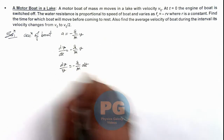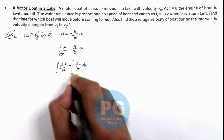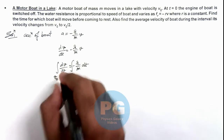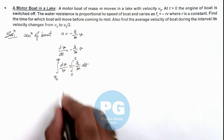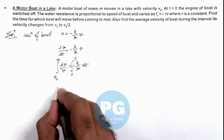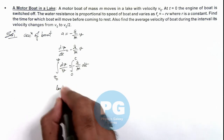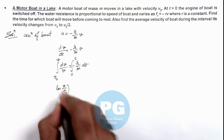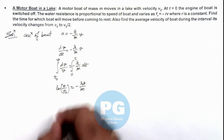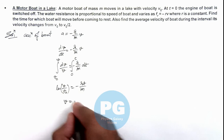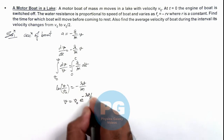If we integrate this term — at t = 0 the speed was v₀, and at time t the speed changes to v — the left-hand side becomes ln(v), and substituting limits this gives ln(v/v₀) = -rt/m. On simplifying, this gives us the speed as v = v₀ × e^(-rt/m).